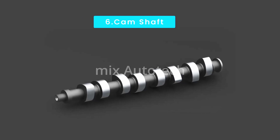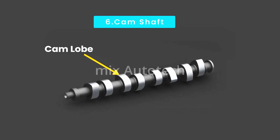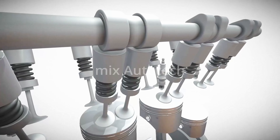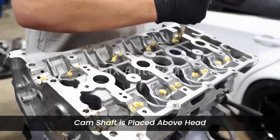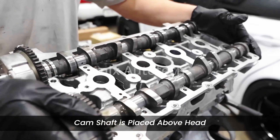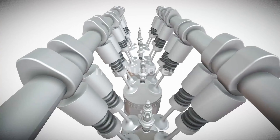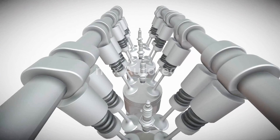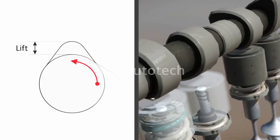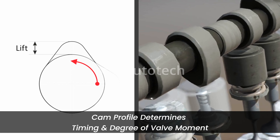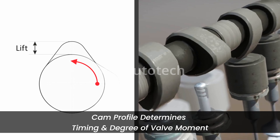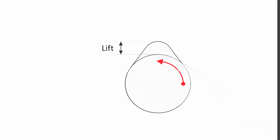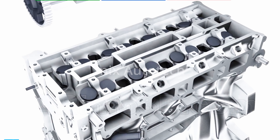A camshaft features a series of cam lobes, each carefully designed to control the movement of a specific valve. The camshaft is positioned above the cylinder head, and it dictates the precise timing of valve openings and closings, ultimately shaping an engine's performance. The shape of each cam lobe, known as the cam profile, determines the timing and degree of valve movement. The engine head with valves and camshaft is then attached to the top of the cylinder block.